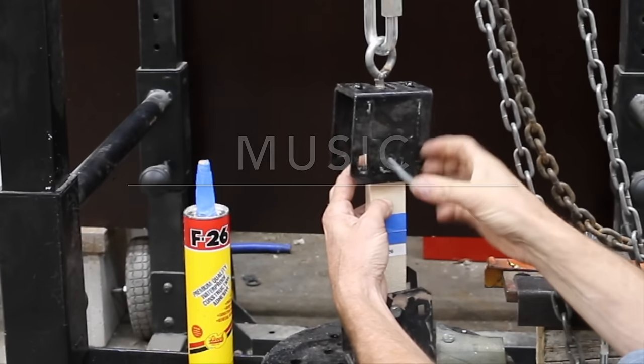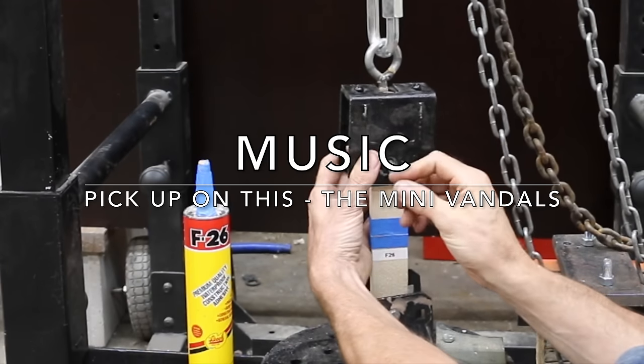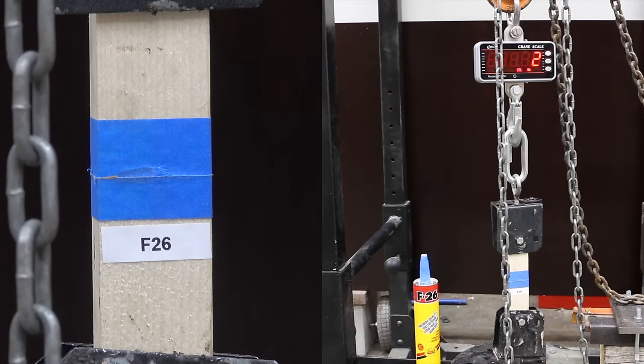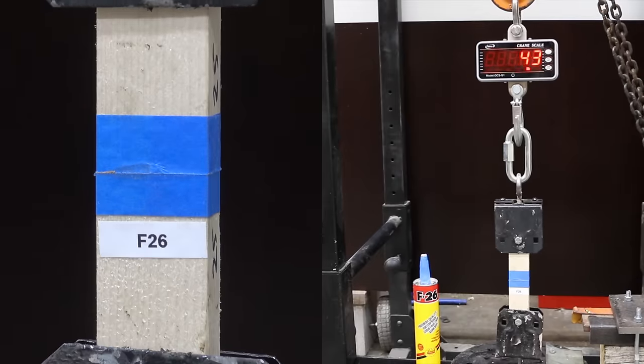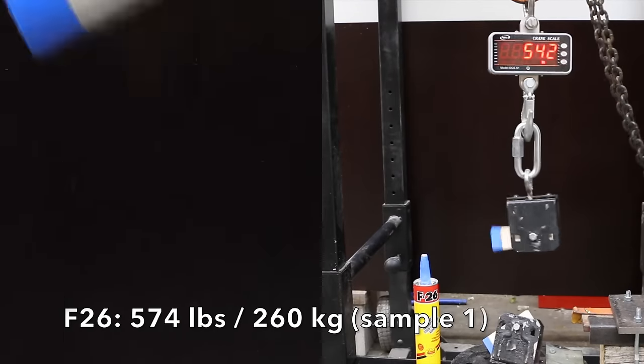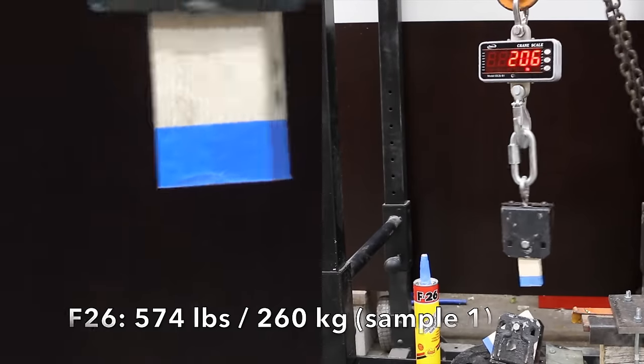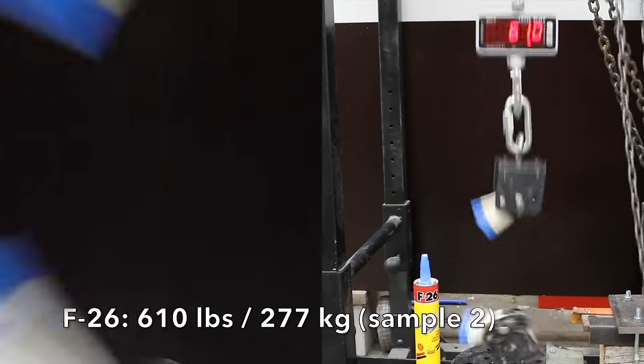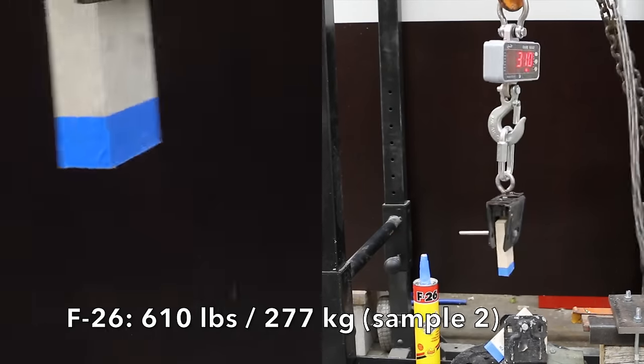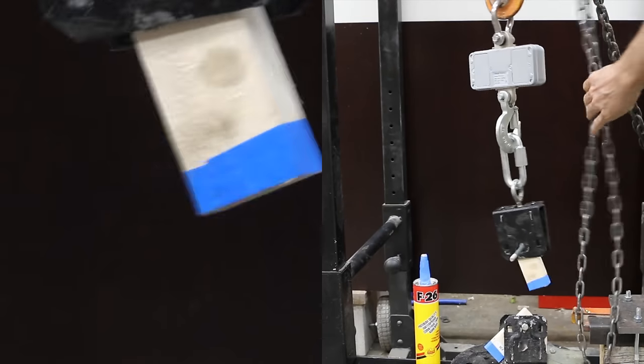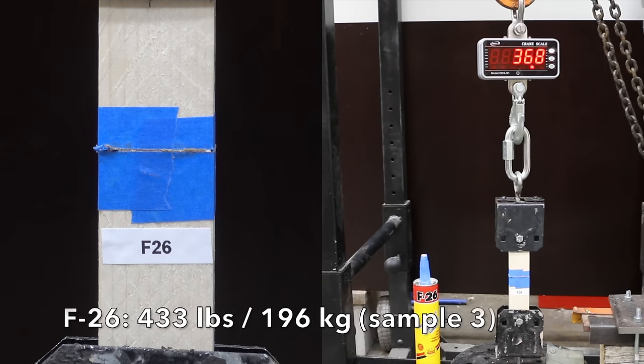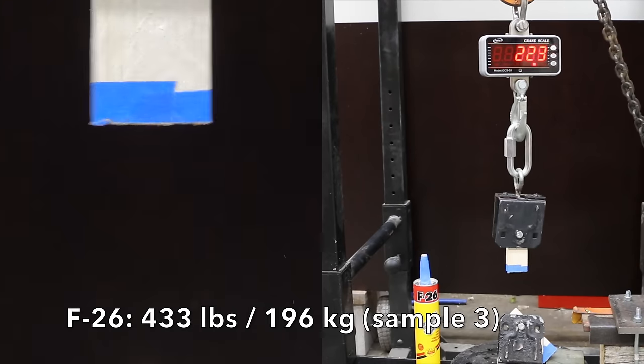In the next test, we'll be measuring tensile strength of these 1x2s. Once the piece of wood is in position, I'll slide the pins in through the wood and begin the test. 574 pounds is very impressive. The next one was even better at 610. The third was down some to 433.